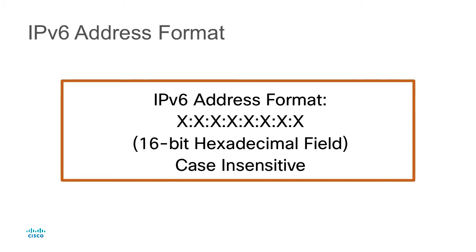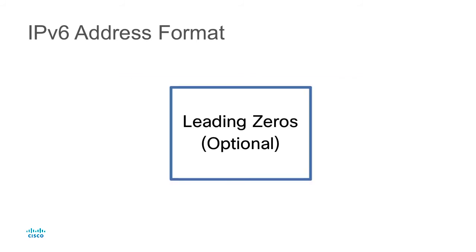You'll need to understand the IPv6 address format. We represent it as a hexadecimal value. Each hexadecimal field is 16 bits. These are case insensitive — we don't really care whether it's uppercase or lowercase. So we're going to have a combination of letters and numbers. When we look at one of these 16-bit fields, if there are leading zeros in that field, those are optional. The reason they're optional is because we delineate each field with a colon, and the protocol is smart enough to simply fill in those leading zeros so we end up with a proper 16-bit hexadecimal field.